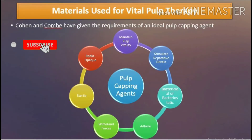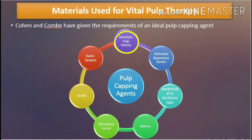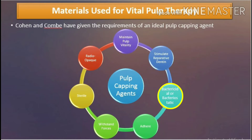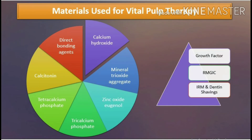Materials used for vital pulp therapy: Cohen and Kuhn have given the requirements of an ideal pulp capping agent. It should maintain pulp vitality. It should stimulate reparative dentin formation. It should be either bactericidal or bacteriostatic in nature and should be able to provide a bacterial seal. It should adhere well to both the dentin and the overlying restorative material. It should be able to resist the forces under the restoration during the lifetime of the restoration. It should be sterile and preferably radiopaque.